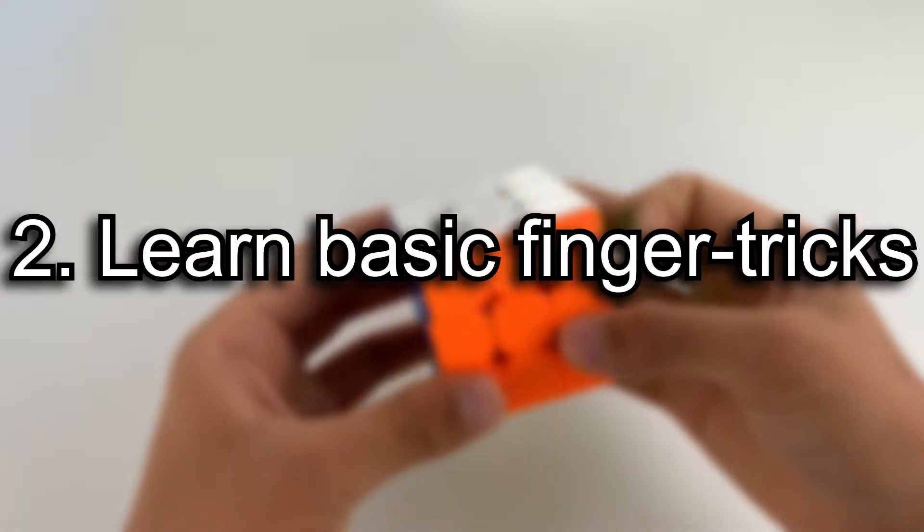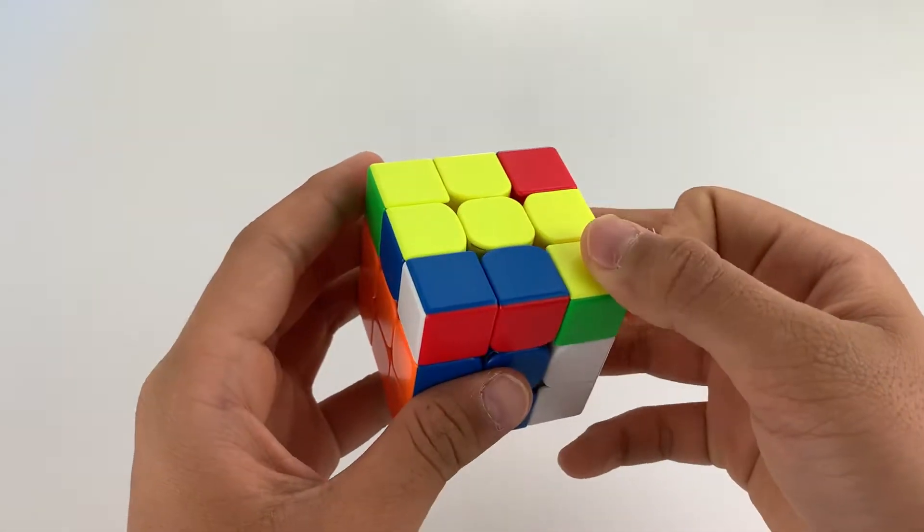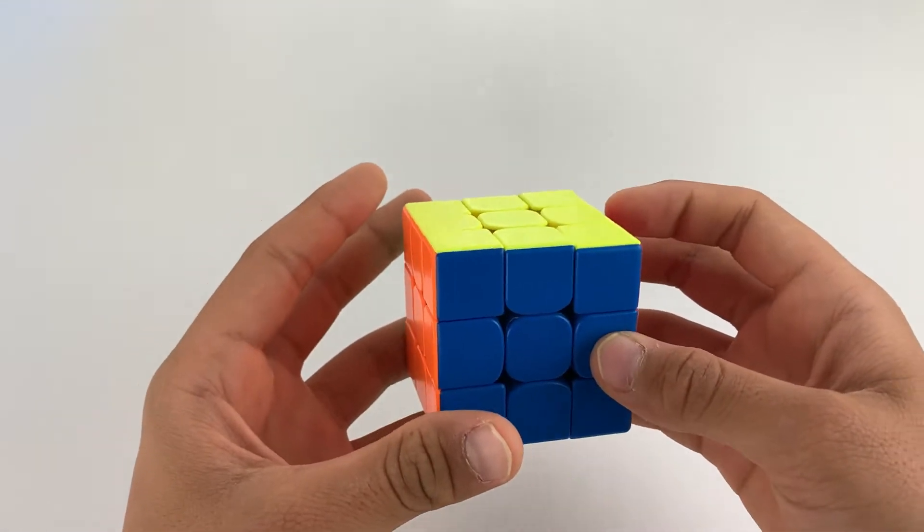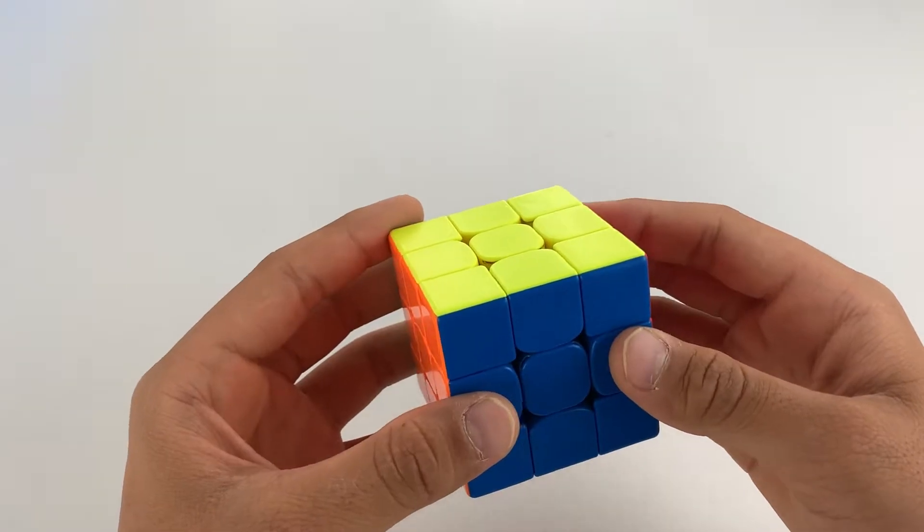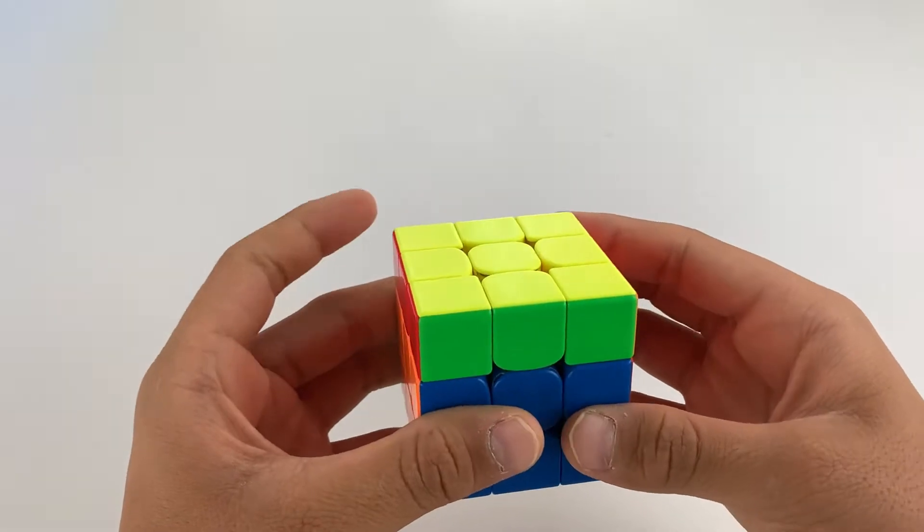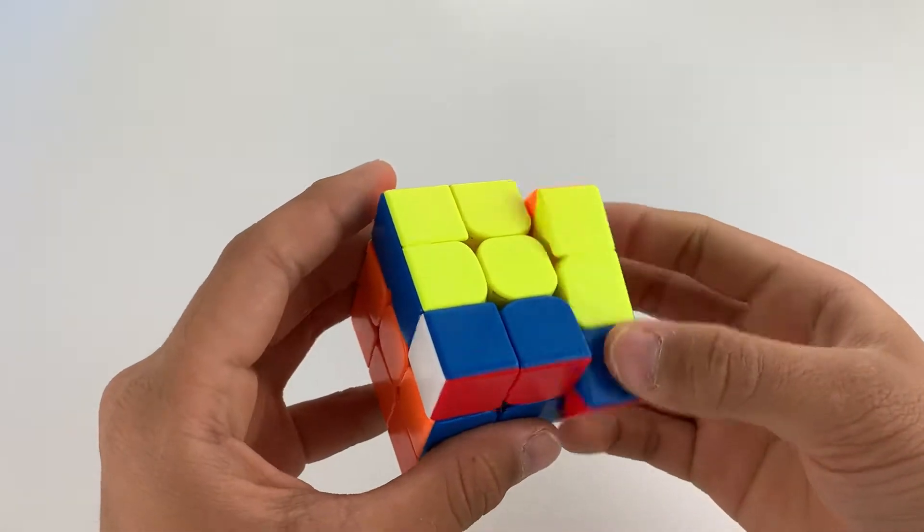Number two, learn basic finger tricks. In the last step, you'll be doing this algorithm and that's where the U2 flick is going to come in handy. When you use the U2 flick is the second to last move because you have two U's in a row and doing this just isn't very efficient. So instead of doing this,